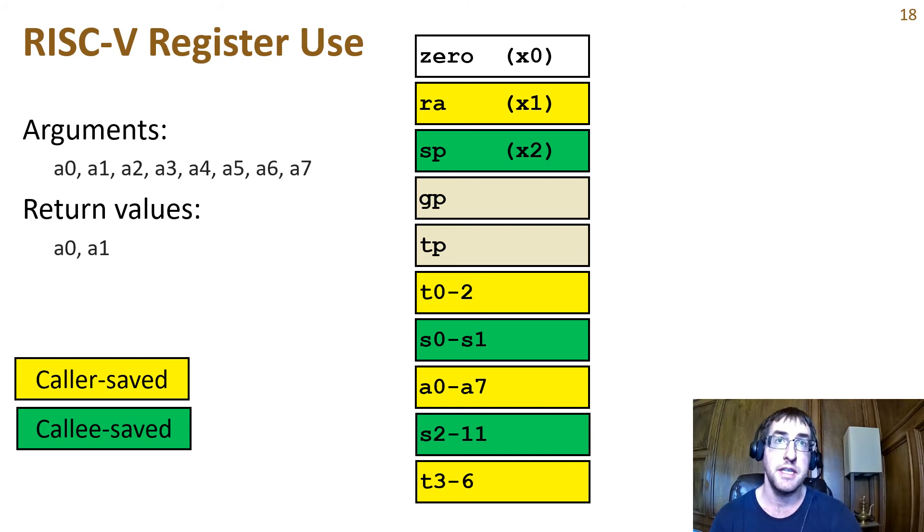A caller saved register needs to be saved in a function before calling another function if you want to preserve the value in that register after the subsequent function returns. Typically these registers are saved on the stack, although they can also be saved in a register of the other kind.